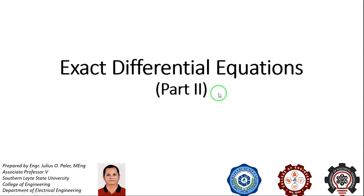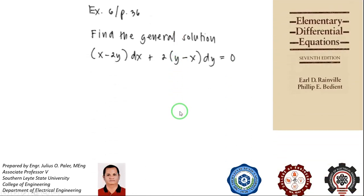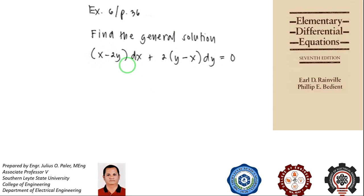This is our first example on exact differential equations. Our first exercise is exercise 6 on page 36 of our book, and we are asked to find the general solution of the differential equation: quantity x minus 2y dx plus 2 times the quantity y minus x dy equals zero.